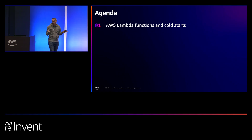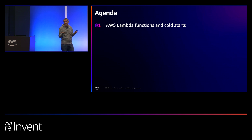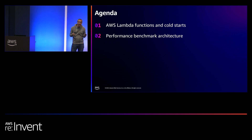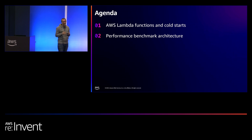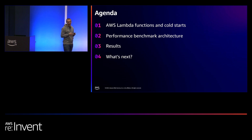So the agenda: we are going to talk about Lambda functions — who is using Lambda here? Okay, decent crowd, so you are at the right spot. We'll talk about cold starts and what factors influence them, because there are many factors. Then we'll look at the architecture of the benchmark — it's 100% serverless, an inception-like experience using AWS Lambda to deploy and benchmark Lambda functions. We'll cover results and finally what's next for the tool, for cold starts.